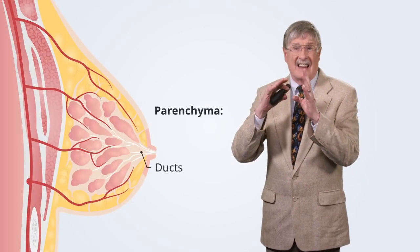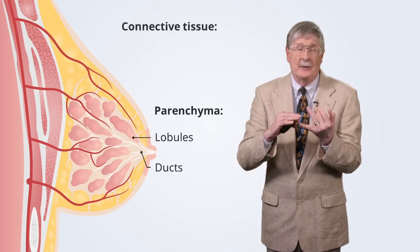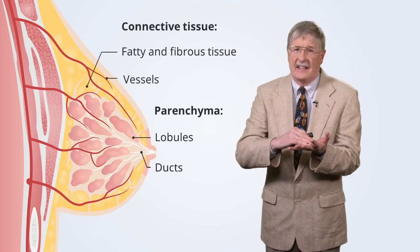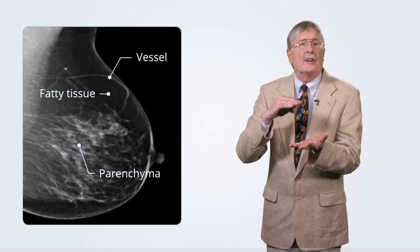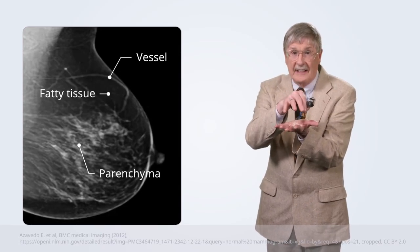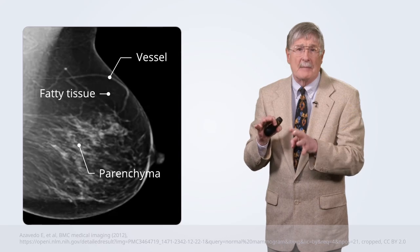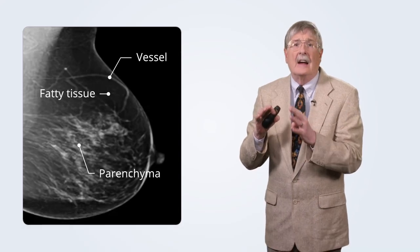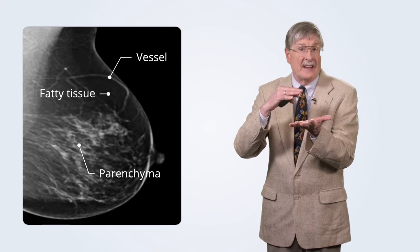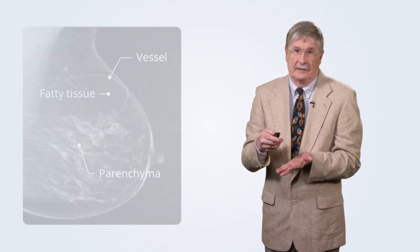Normal breast is composed of parenchyma — ducts and lobules — as well as mesenchyma, connective tissue, fat, and vessels. When we look at the normal breast compressed between the radiographic plates, relative areas of clarity represent mostly fatty tissue. White areas represent the parenchyma, the epithelium, as well as the vasculature and connective tissue.